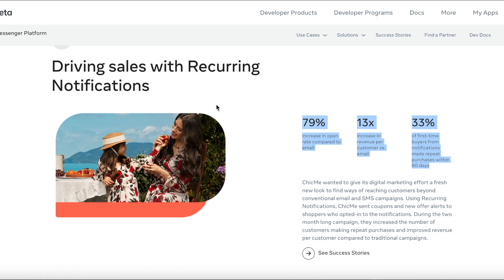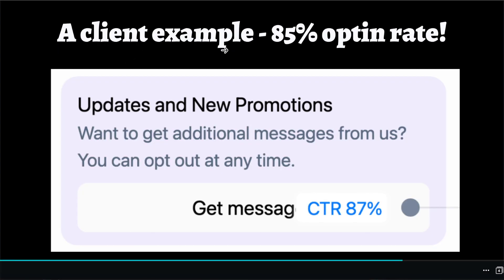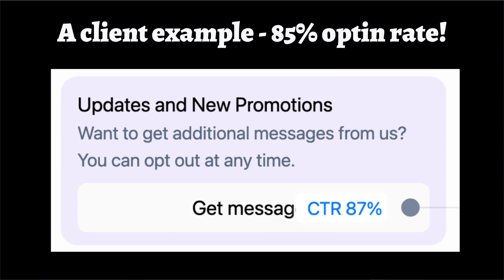Now let's look at a client example. We implemented the Messenger list for this client and ended up getting over 85% opt-in rates — meaning out of 100 people who came to the chatbot in Messenger, 85 actually wanted to receive updates and promotions via Messenger. If you're not using Messenger list yet, you should consider it, as it has high opt-in rates and leads to more sales and business growth.